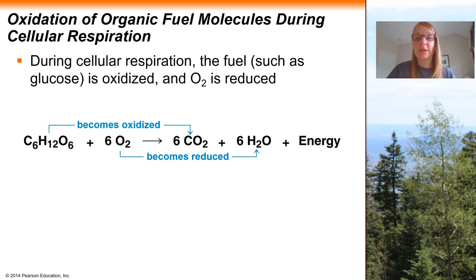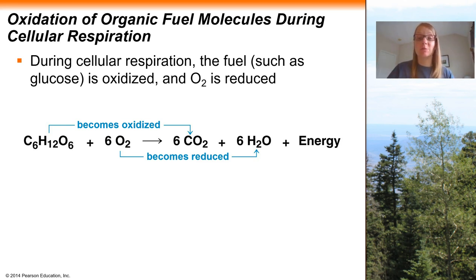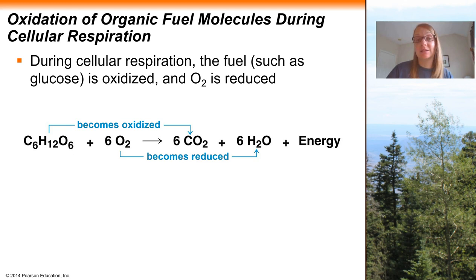Previously, we had introduced redox reactions — a chemical reaction where an electron is transferred between reactants within a particular reaction. We can now take this concept and apply it to cellular respiration, because cellular respiration is not only a catabolic process and an exergonic process, but it is also a redox process. This means we're going to be taking and moving electrons between reactants of cellular respiration.